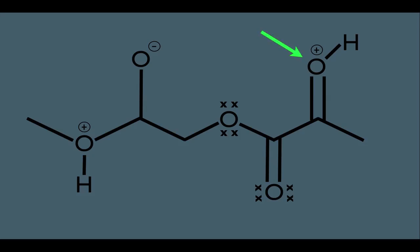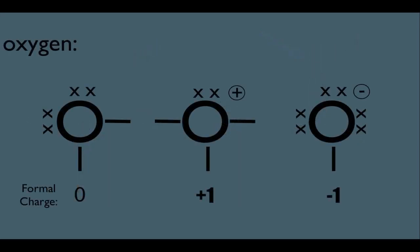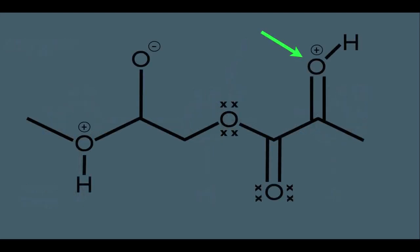Now let's look at this oxygen right here. It has a positive formal charge. Going back to what we know: whenever oxygen has a positive formal charge, it has a total of three bonds and one lone pair of electrons. Notice the oxygen has two bonds below to the carbon and one bond to the upper hydrogen — that's a total of three bonds. So formal charge is telling us that oxygen only has one lone pair of electrons.